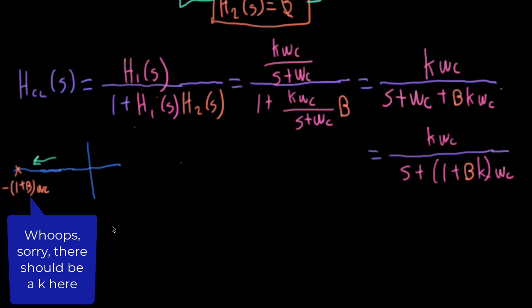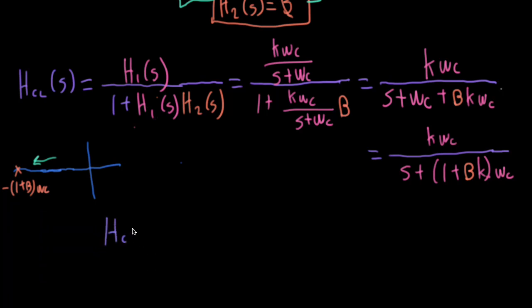However, this did not come for free. If we look at what the DC response is now, we plug in J Omega for S and then plug in 0 for Omega. The S here winds up going away, and the Omega C's cancel. I'm left with K over 1 plus beta K. And as a sanity check, if I were to set beta equal to 0, this term would go away and I would wind up with K again. So using negative feedback winds up lowering the DC gain. But this gives me a mechanism to trade off gain with bandwidth.